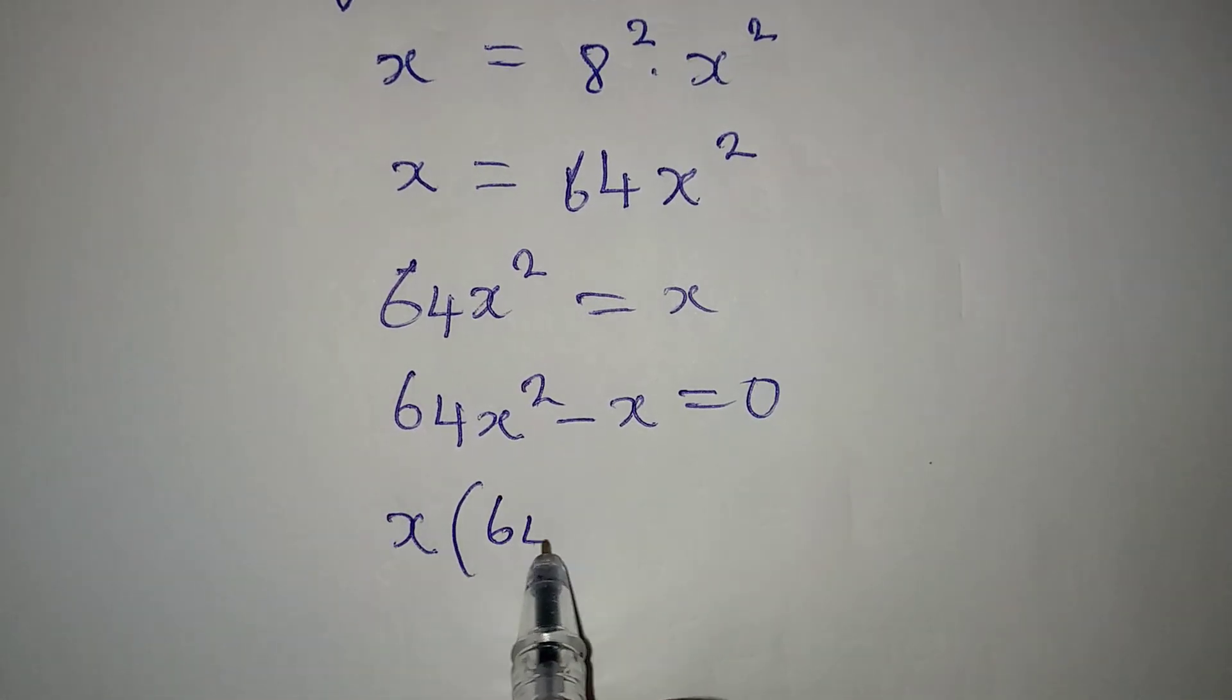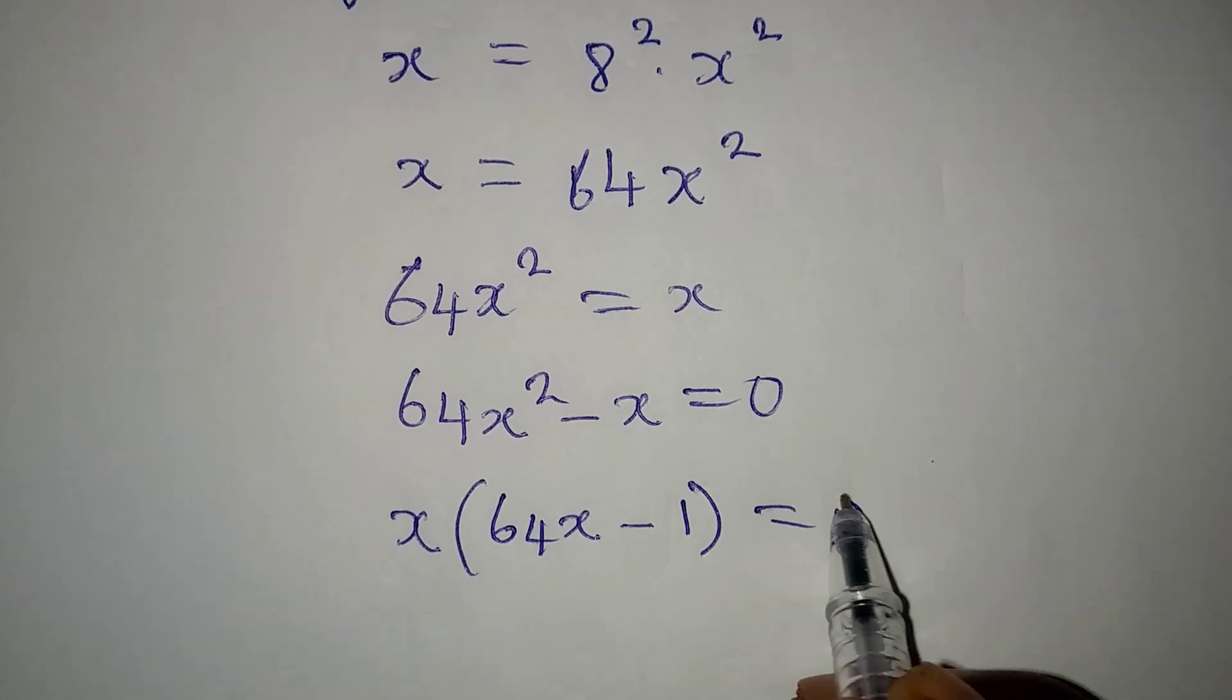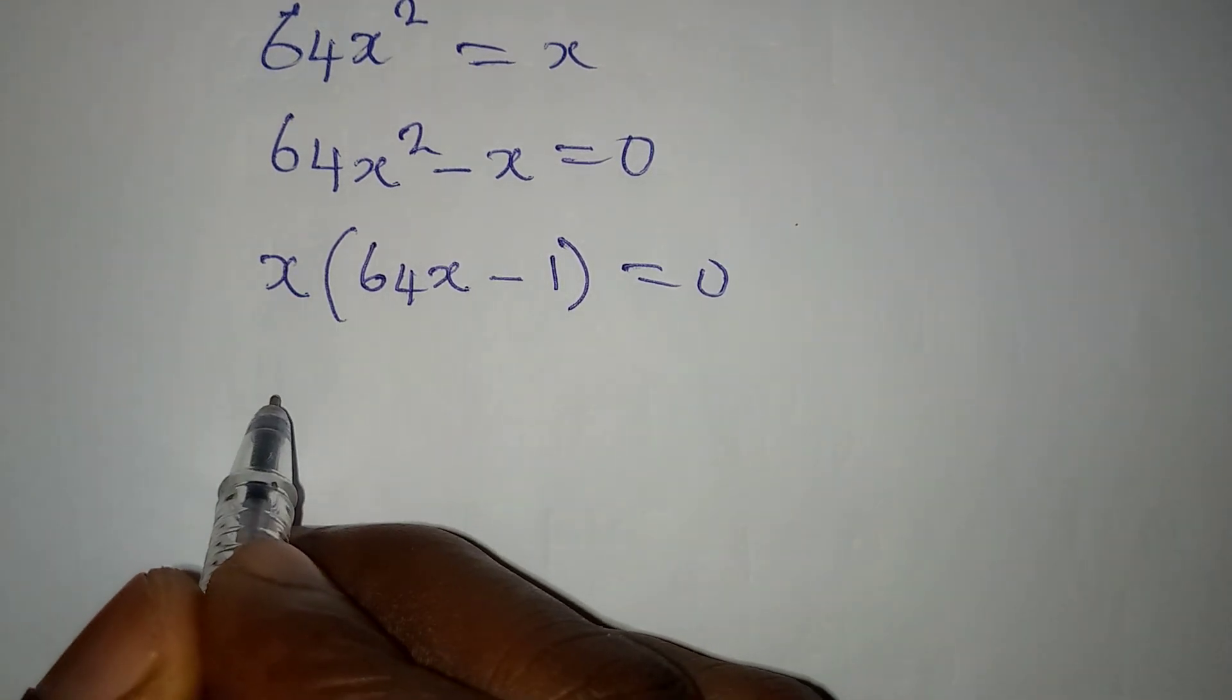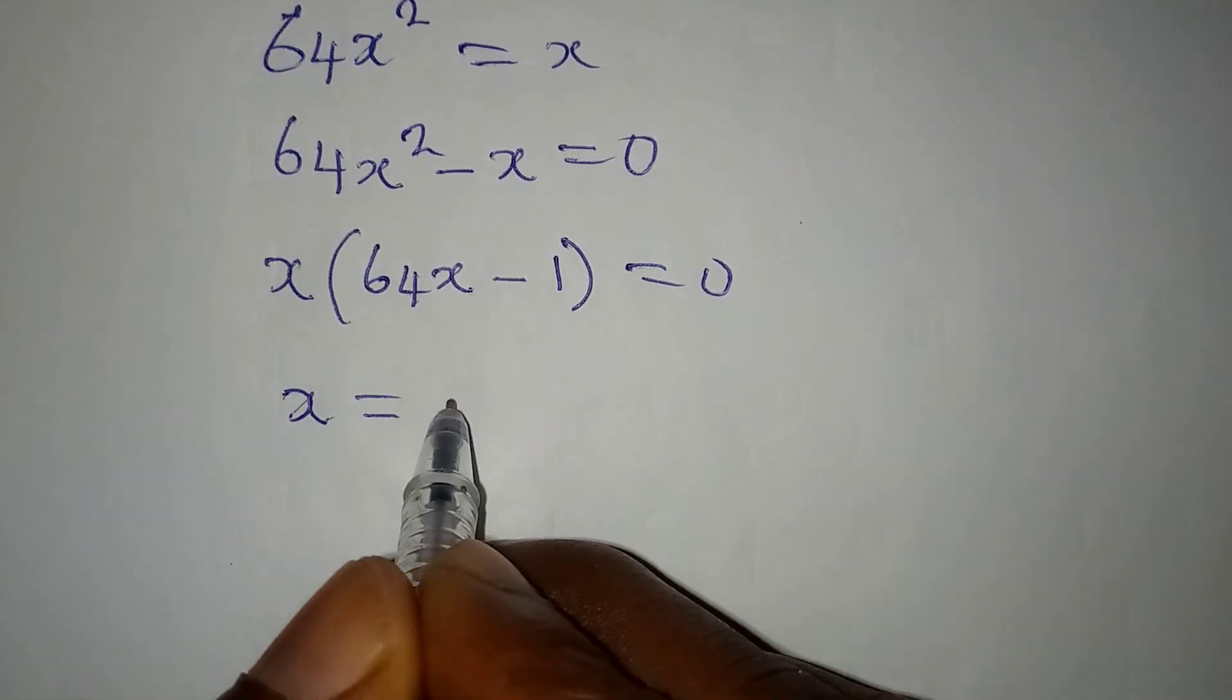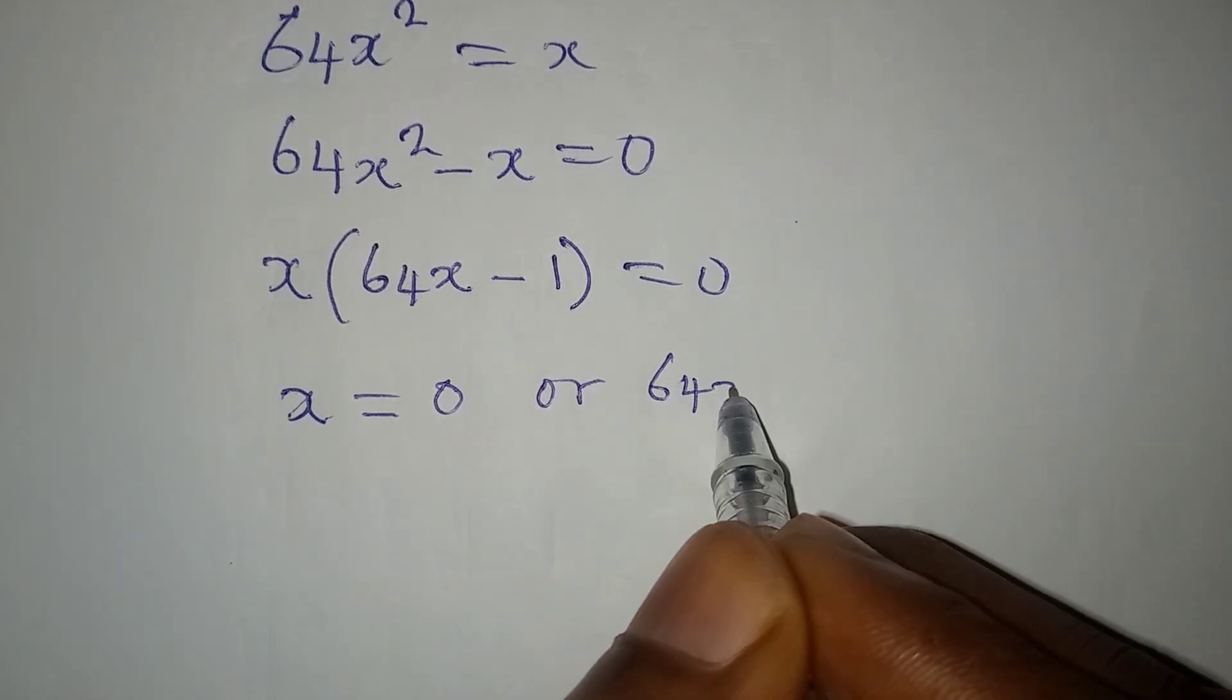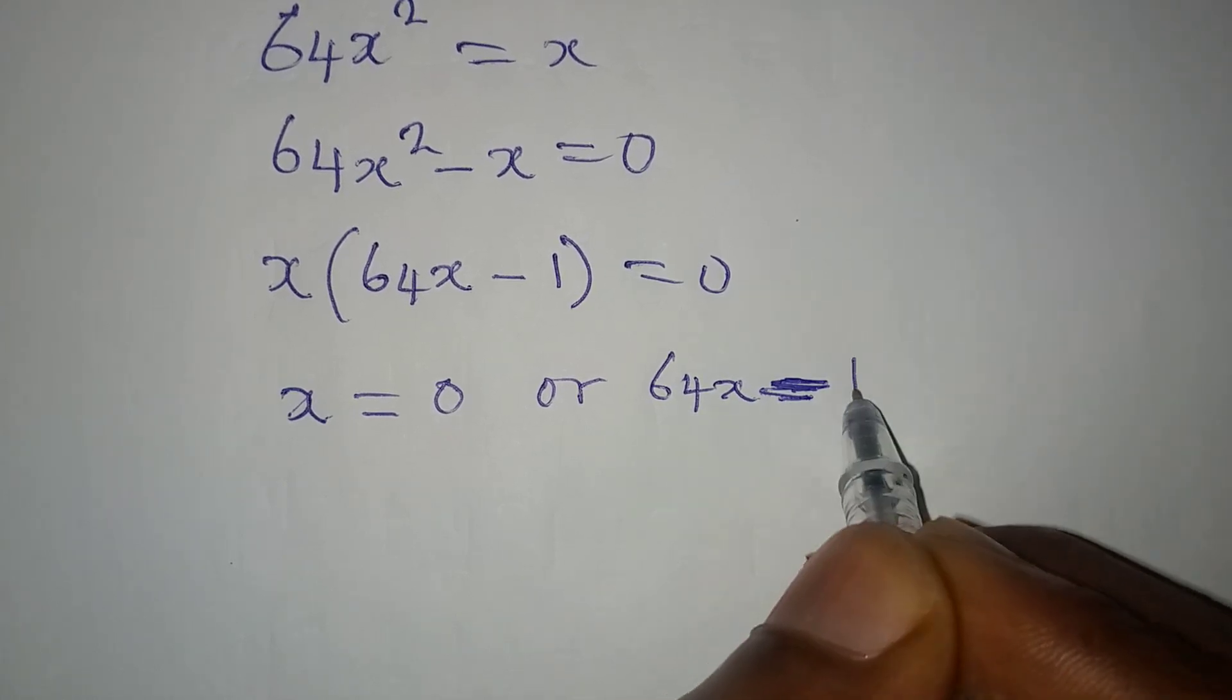So we have x times 64x minus 1 equal to 0. From here, x is either equal to 0 or 64x minus 1 is equal to 0.